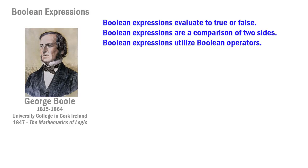Boolean expressions in Python and other languages evaluate to true or false — they are comparisons of two sides of an equation where each side is evaluated and those valuations are compared using Boolean operators. For example, 1 plus 1 equals 2 is true, while 1 plus 1 equals 6 is false. We evaluate data and make choices based on that evaluation in conditional structures or conditional loops.